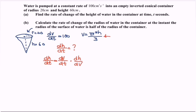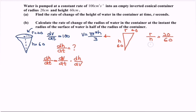We need to express V in terms of h. Looking at the cone, we notice a ratio: h corresponds to 60 and r corresponds to 20. In ratio form, r/h = 20/60 = 1/3, so r = h/3.